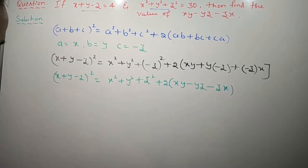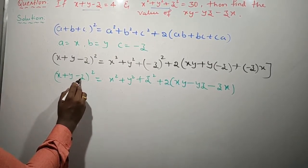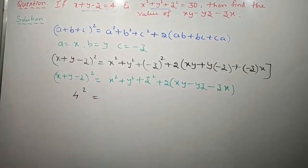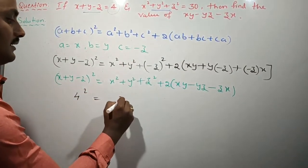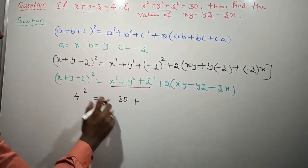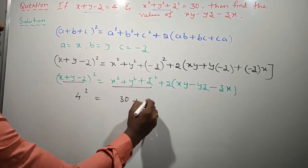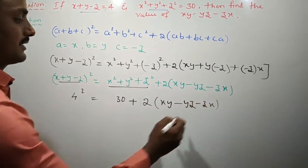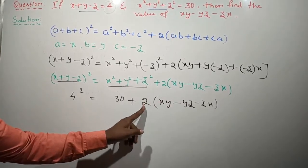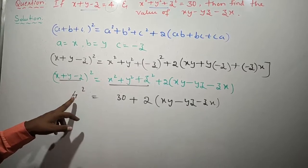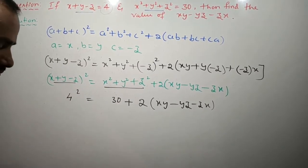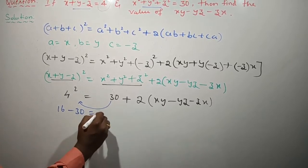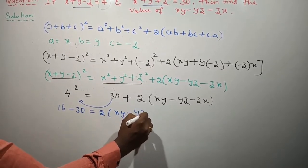Now observe which values are there. The value of x plus y minus z is 4, and this is being squared. So: 4 squared equals x squared plus y squared plus z squared, which is 30, plus 2 into xy minus yz minus zx — which is the value we are finding. This gives: 4 squared equals 30 plus 2 into xy minus yz minus zx.